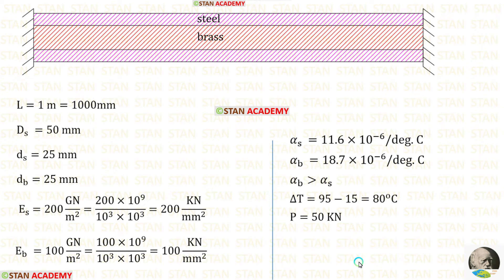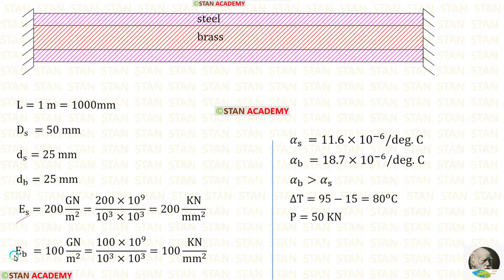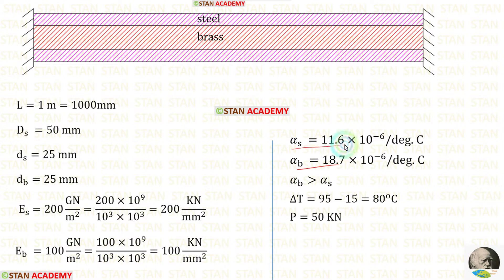First let us note the given data. Length of the bar is 1 meter, converted to millimeters. The external diameter of steel is 50 mm and internal diameter is 25 mm. The diameter of brass is 25 mm. Young's modulus values are given in giganewton per meter squared and converted to kilonewton per millimeter squared. Alpha values for steel and brass are given — the alpha value for brass is higher than for steel. Temperature rises from 15 to 95 degrees, so delta T is 95 minus 15 equals 80 degrees. The load P is 50 kilonewton.